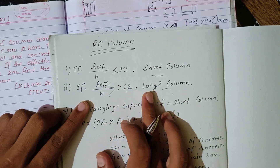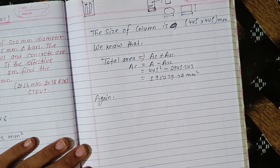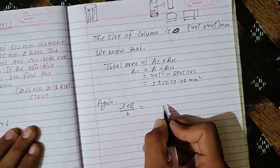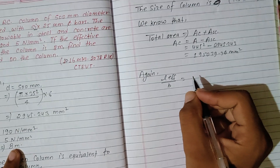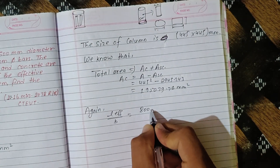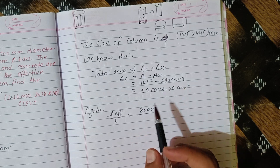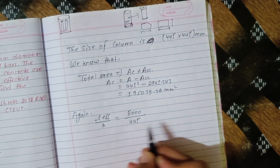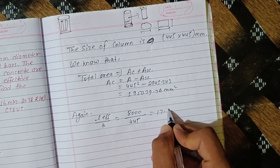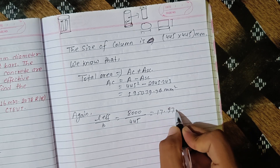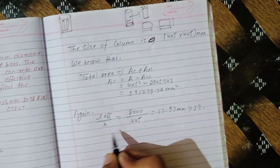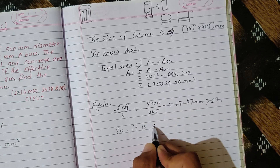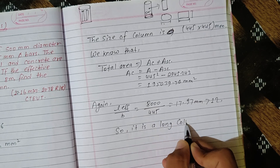Now we check whether it is a long column or a short column. L_eff / B = 8000 mm / 445 = 17.97, which is greater than 12. Therefore, this is a long column. For a short column we would simply apply the direct formula, but since it is a long column, we use the long column formula.